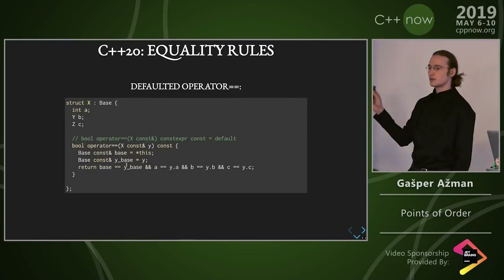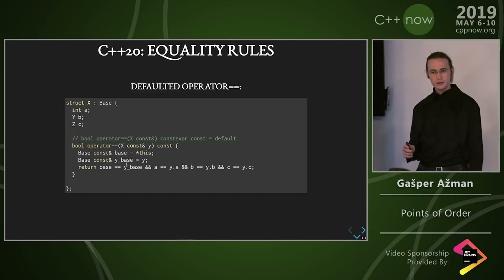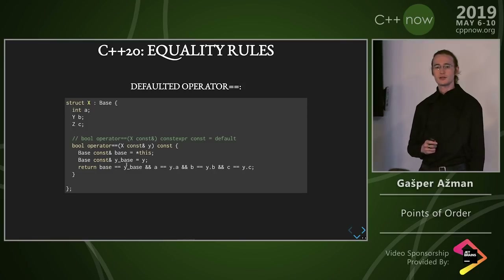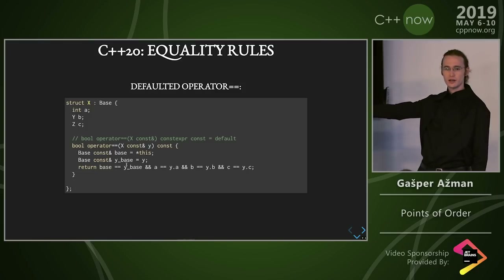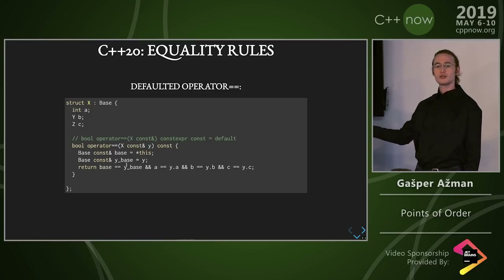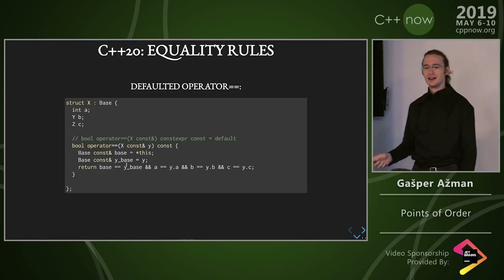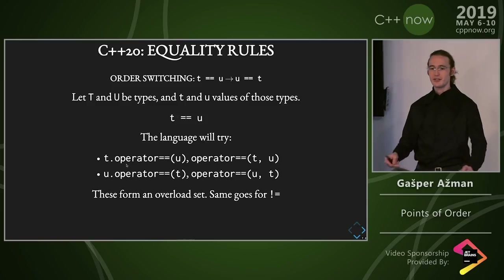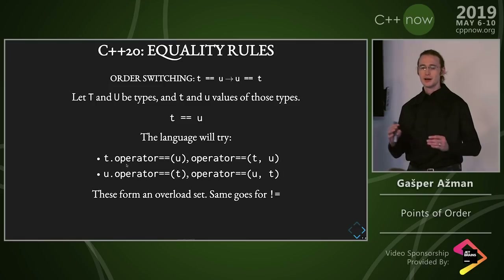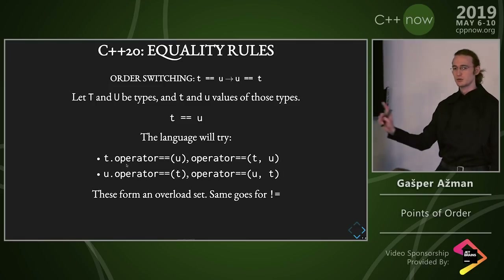This is where we come to the part of the spaceship paper that's about equality. We have the ability to let you default operator equals, and that's really nice because it'll do what you think it'll do. It'll compare bases — the point is you will forget to compare bases; it will not. You need to write '= default' otherwise we'd be breaking code.